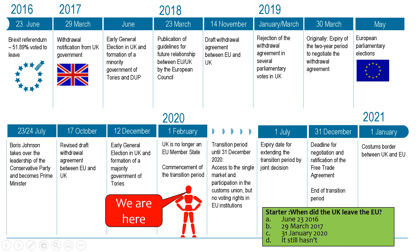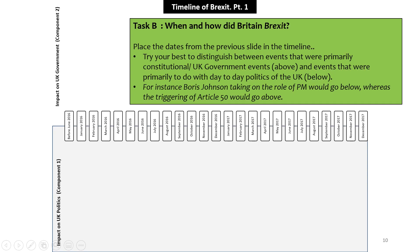This is an important document. It tells us what seemed like an eternity of Britain leaving the EU. It's quite interesting to go through this, because for you guys, you would have been growing up in 2016 — year eight — when the Brexit referendum happened. Ultimately, what happened during those four years was a slow process of us leaving the EU. There is a timeline in your notetaker which divides up what we refer to as impact on the UK government and impact on UK politics.